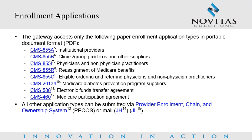The Gateway accepts only the following paper enrollment application types in Portable Document Format or PDF: CMS 855A Institutional Providers; CMS 855B Clinics, Group Practices, and Other Suppliers; CMS 855I Physicians and Non-Physician Practitioners; CMS 855R Reassignment of Medicare Benefits; CMS 855O Eligible Ordering and Referring Physicians and Non-Physician Practitioners; CMS 20134 Medicare Diabetes Prevention Program Suppliers; CMS 588 Electronic Funds Transfer Agreement; and CMS 460 Medicare Participation Agreement.